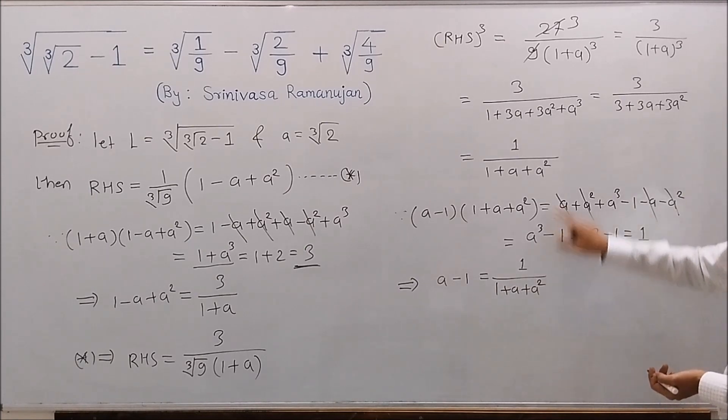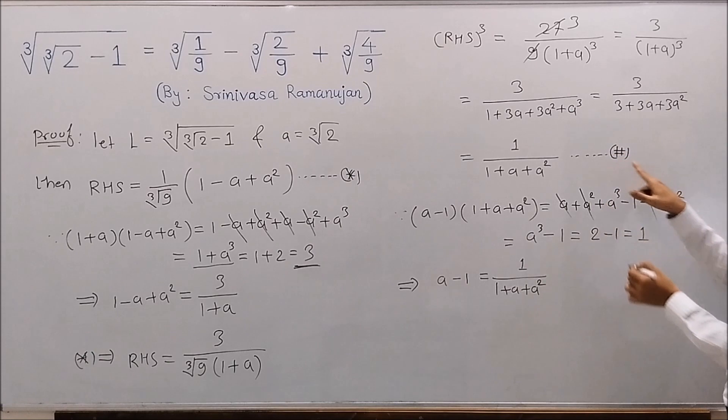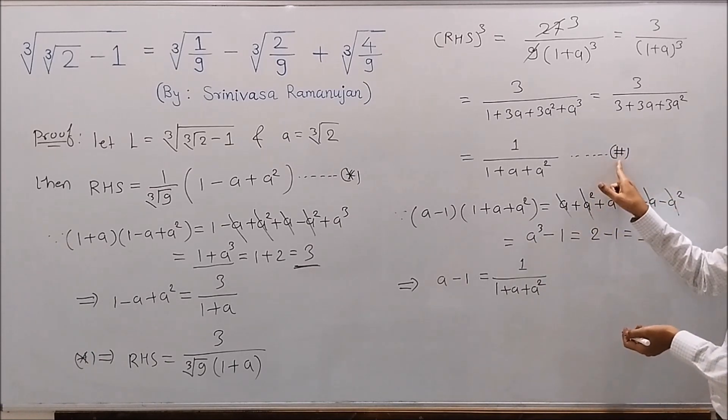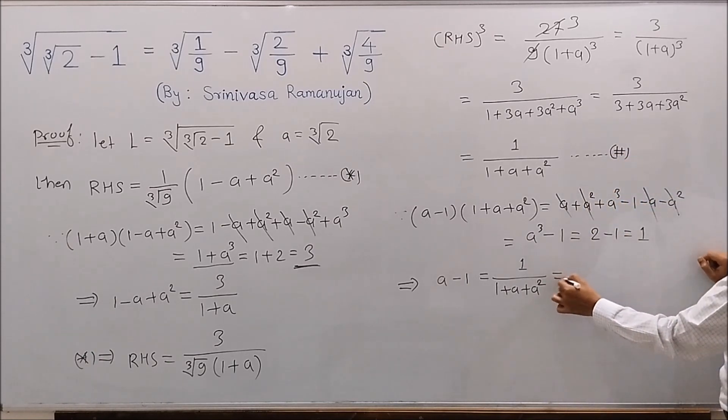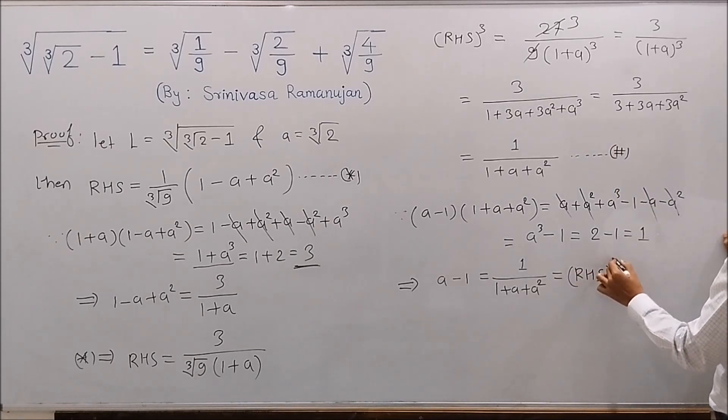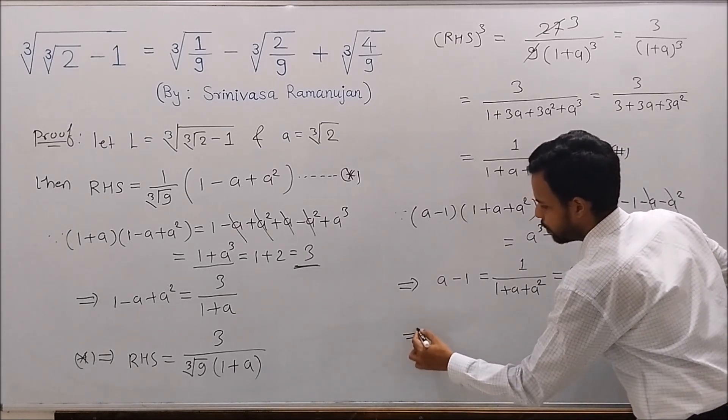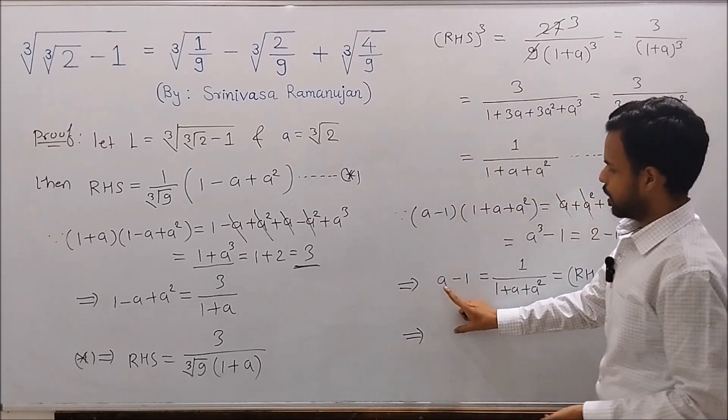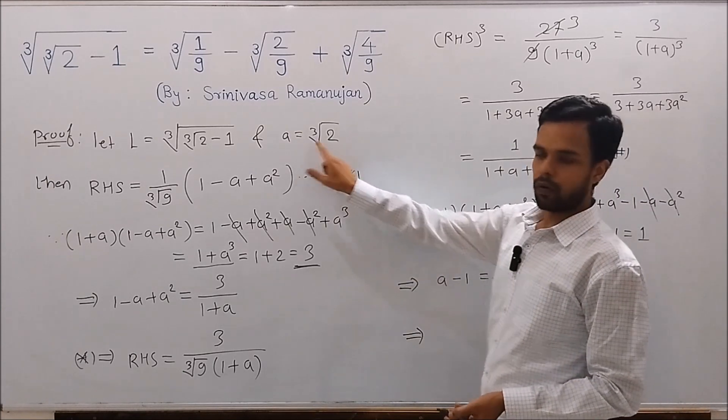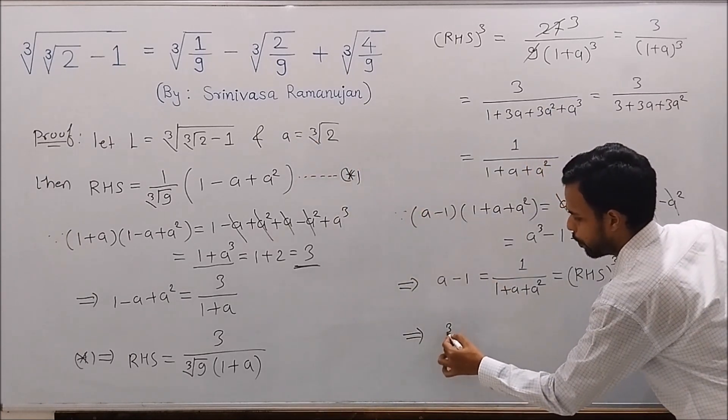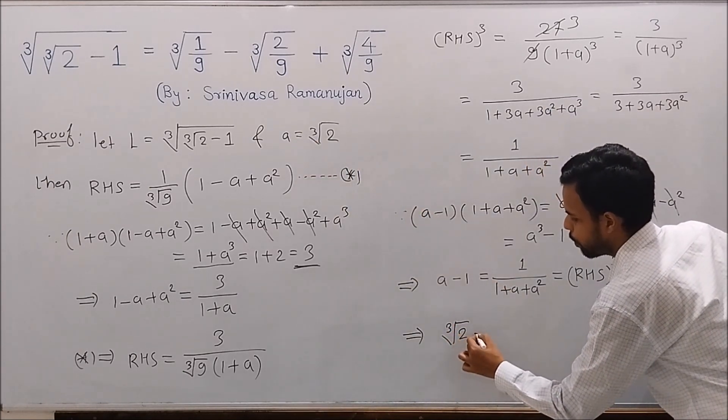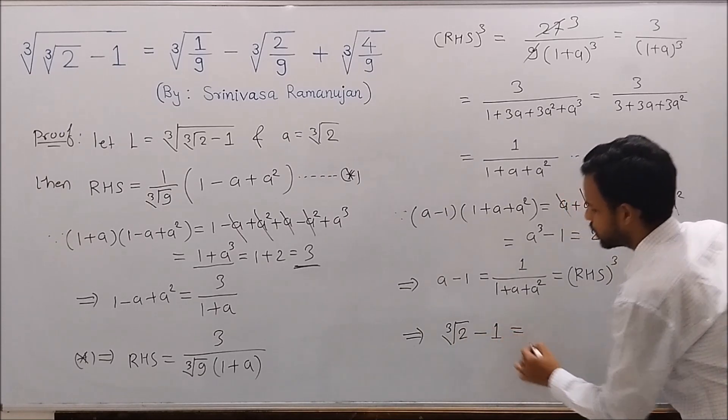From this equation, we have this equals RHS cubed. So this implies that cube root of 2 minus 1 equals RHS cubed. Taking cube root on both sides, this implies cube root of (cube root of 2 minus 1) equals RHS.